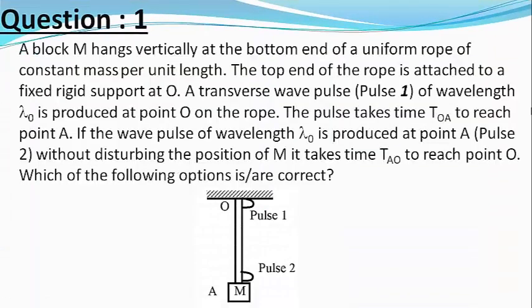Our first question is: a block M hangs vertically at the bottom end of a uniform rope of constant mass per unit length. The top end of the rope is fixed to rigid support at O. A transverse wave pulse 1 of wavelength lambda 0 is produced at point O on the rope. The pulse takes time TOA to reach point A.